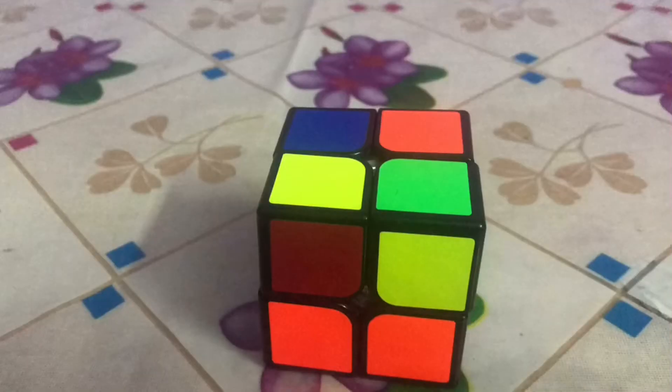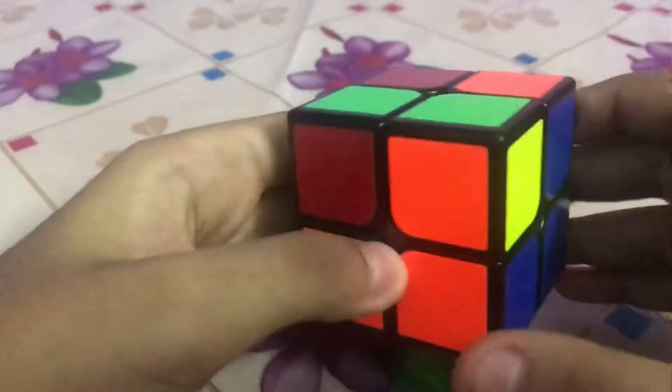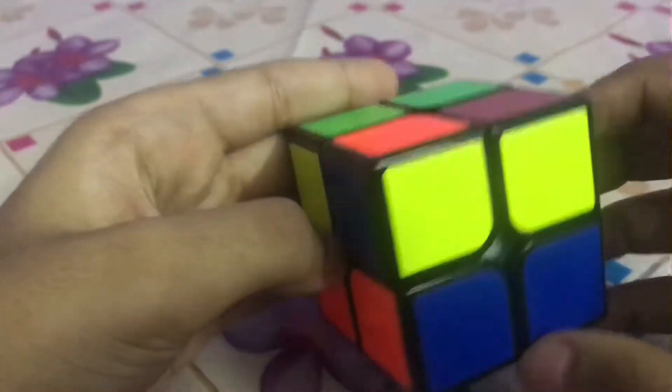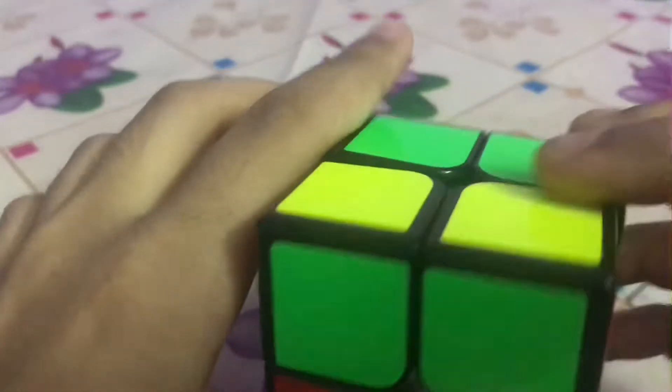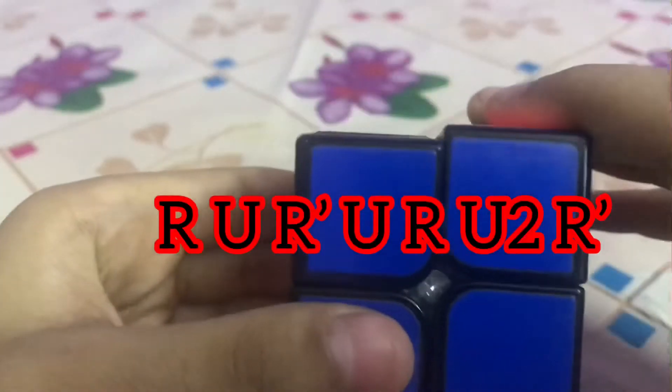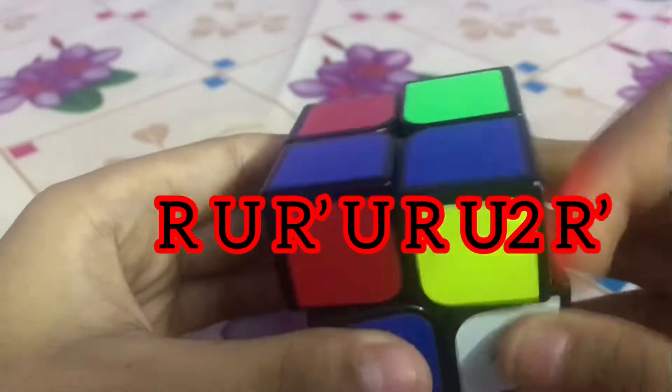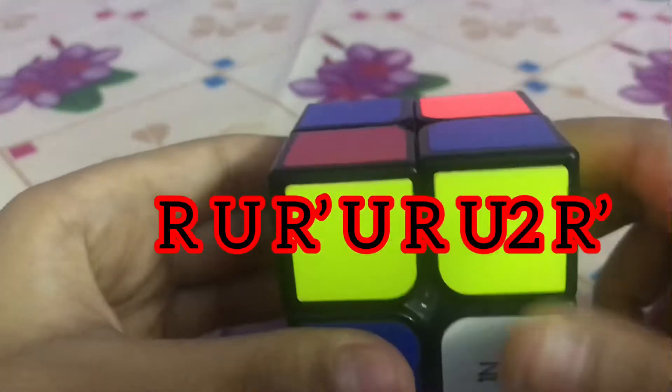For solving yellow, you have to make the cube like this by equations. In this situation, no yellow pieces are on the top layer. In some cases, it may be like this also. So for solving this situation, you have to do R U R dash U R U2 R dash.